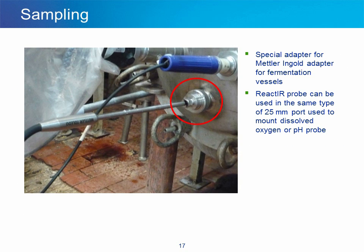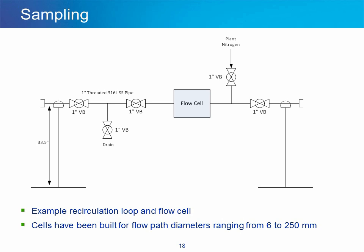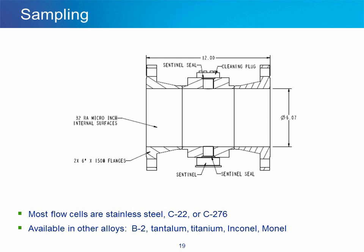A special adapter can be embedded in a Mettler-Ingold adapter for fermentation vessels. Thus, the React-IR probe can be used in the same type of 25 millimeter port commonly used to mount a dissolved oxygen or pH probe. Turning our attention to flow cells, we see an example of a recirculation loop in flow cell setup. Cells have been built for flow path diameters ranging from 6 to 250 millimeters. Most flow cells are made from stainless steel, C22, or C276, but are available in other alloys such as B2, Tantalum, Titanium, Inconel, and Monel.